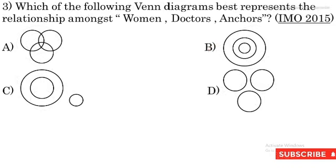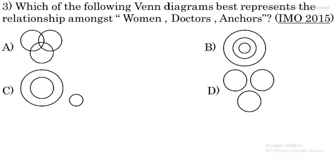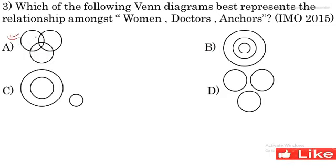Question 3: Which of the following Venn diagram best represents the relationship amongst women, doctors and anchors? Is relationship ko humne pehle bhi kiya hai aur ye question IIMO 2015 mein aa chuka hai. Is type ke questions aapko Olympiad mein milte hain, toh practice karein. A option is the right option — kyunki women doctors ho sakte hain, doctors anchors ho sakte hain, aur women anchors ho sakte hain.